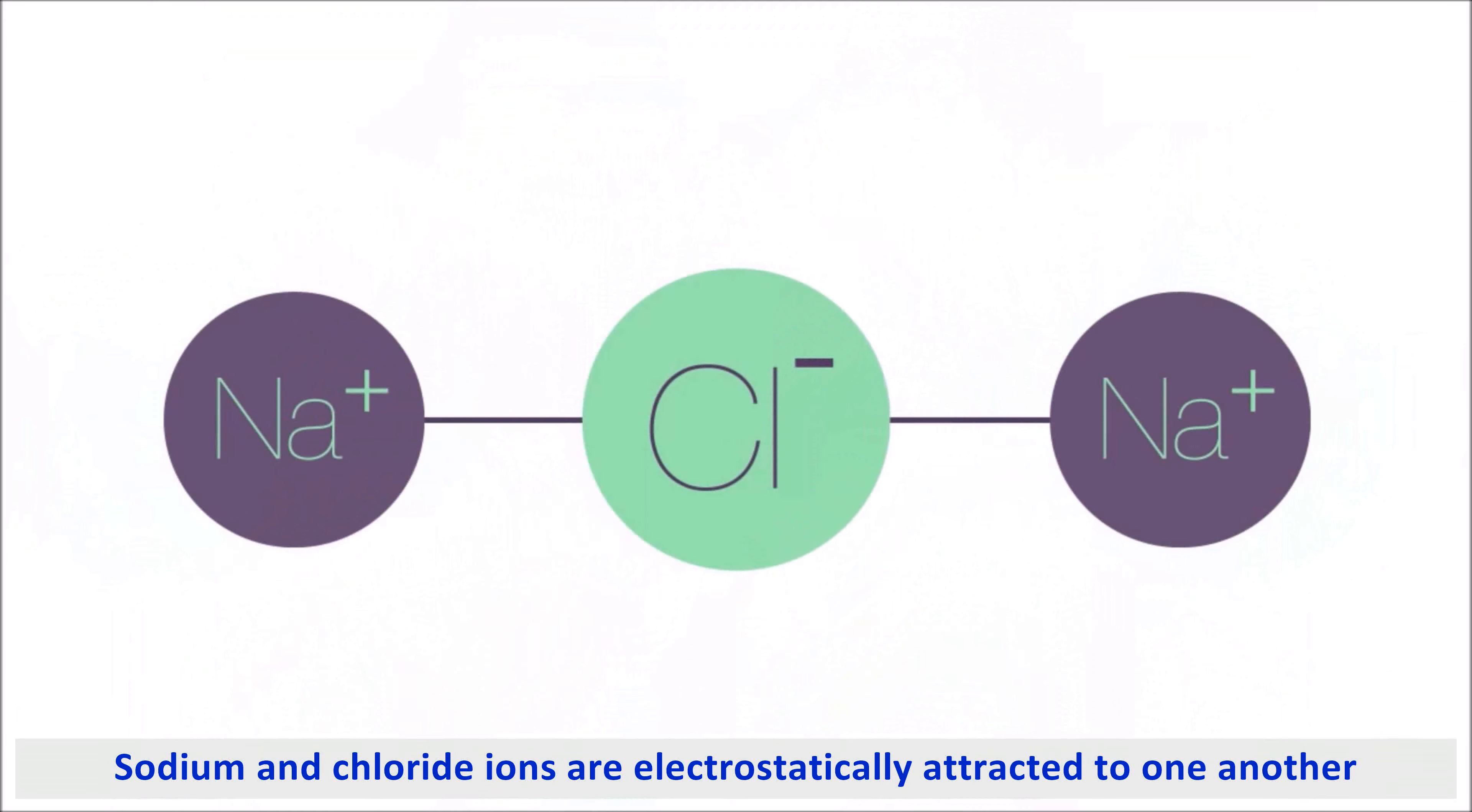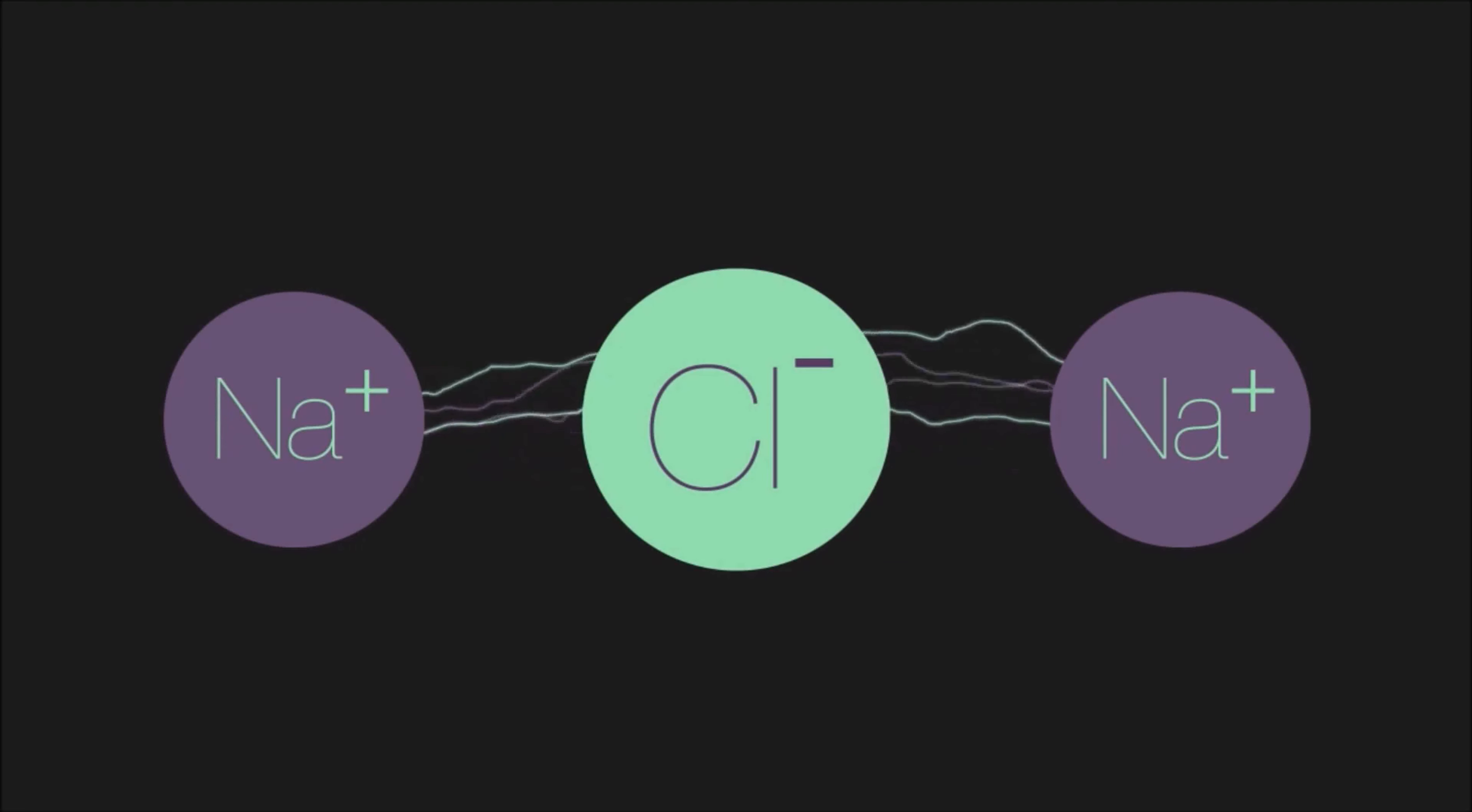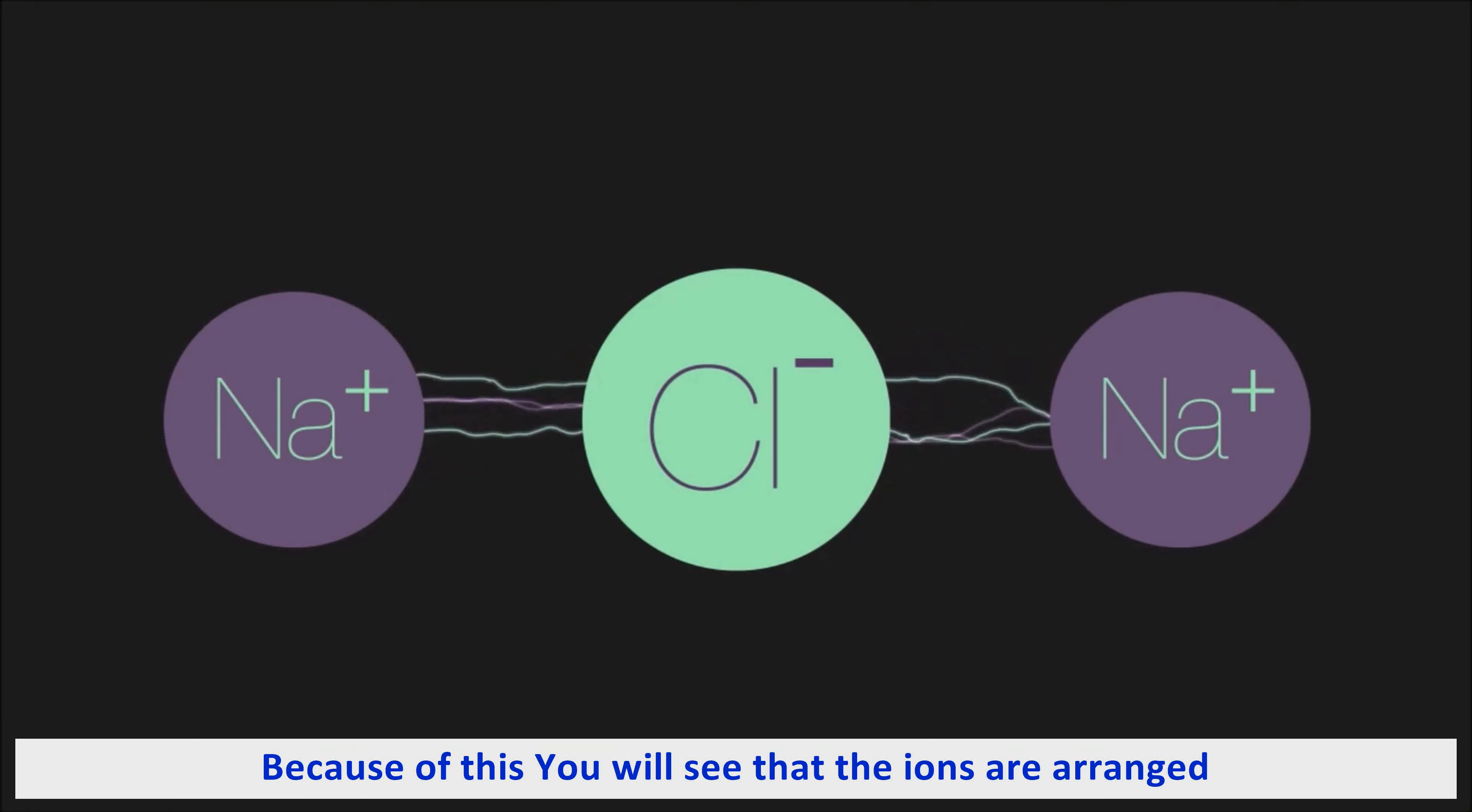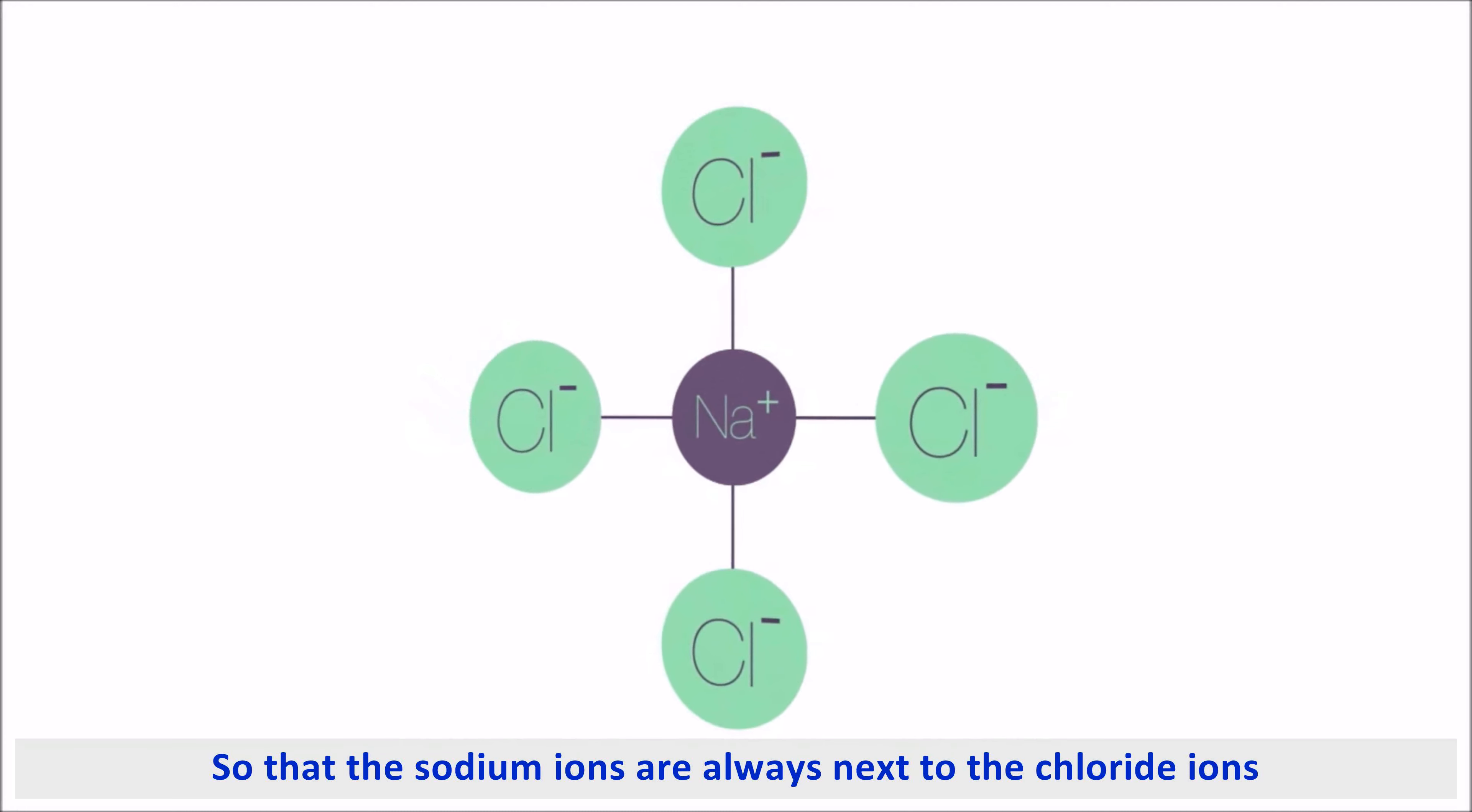We know that sodium and chloride ions are electrostatically attracted to one another. Because of this, you will see that the ions are arranged so that the sodium ions are always next to the chloride ions. This arrangement is seen in all directions of the 3D structure.